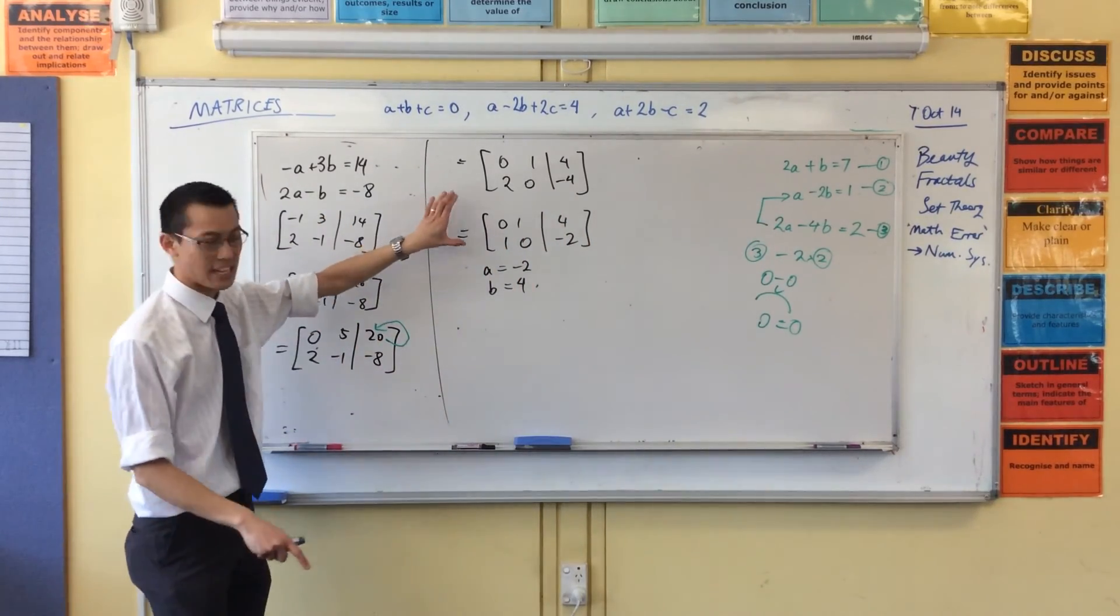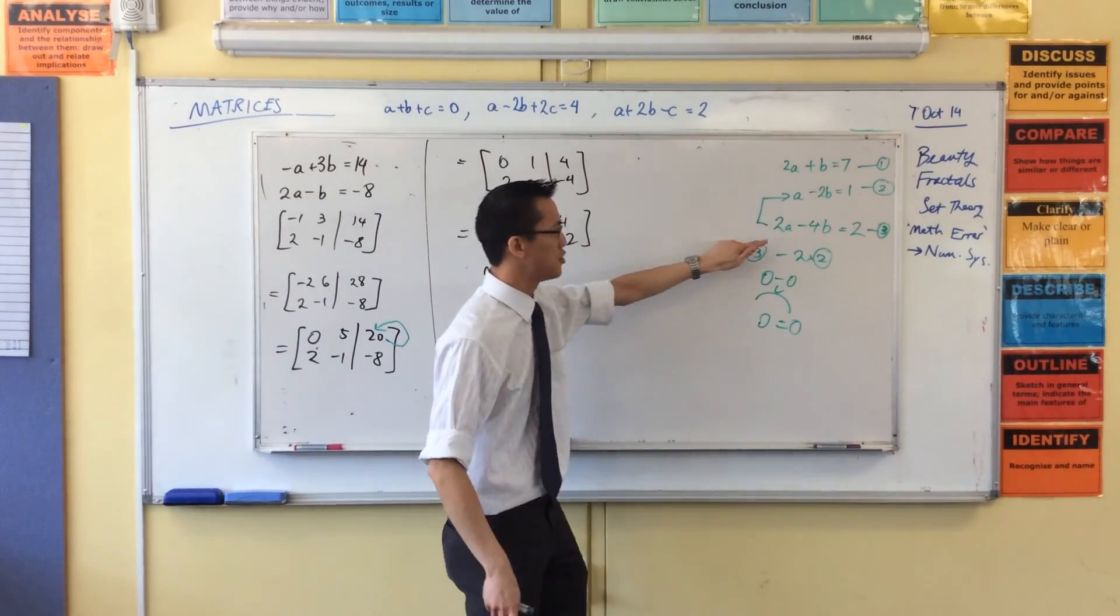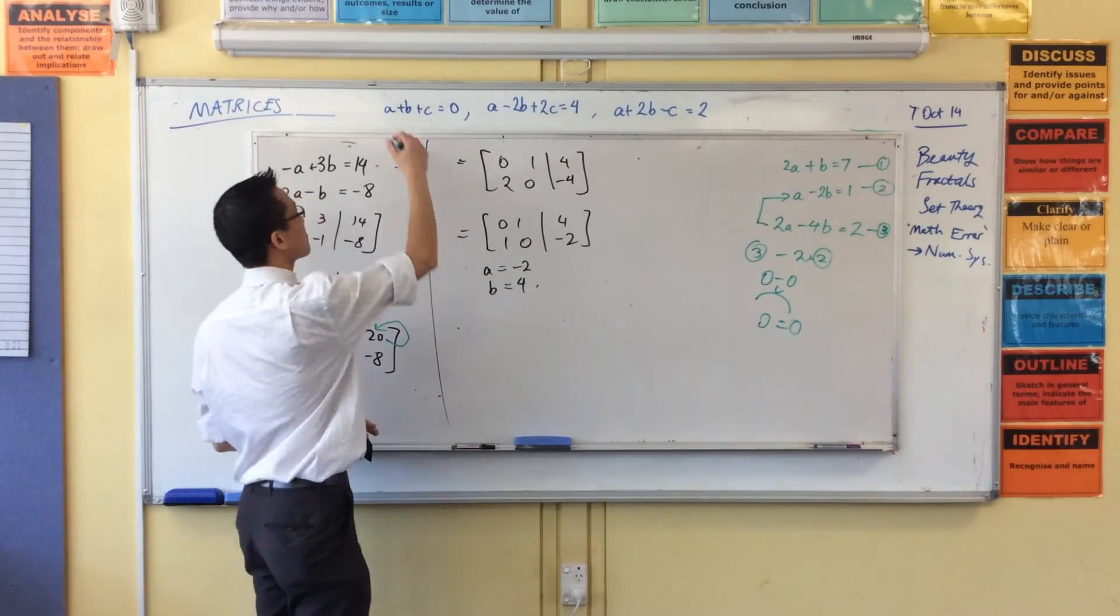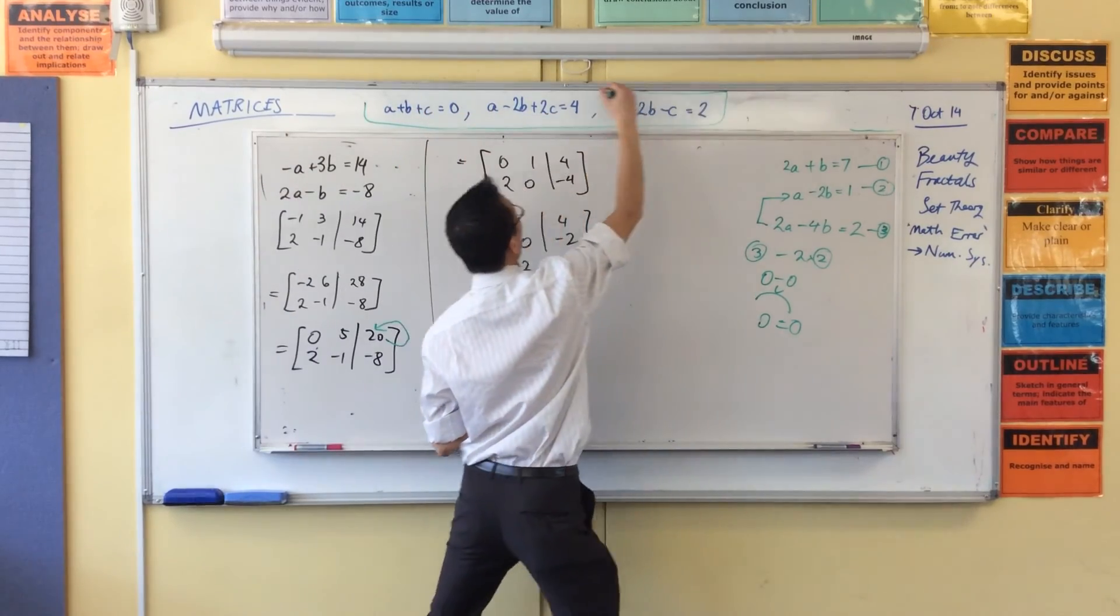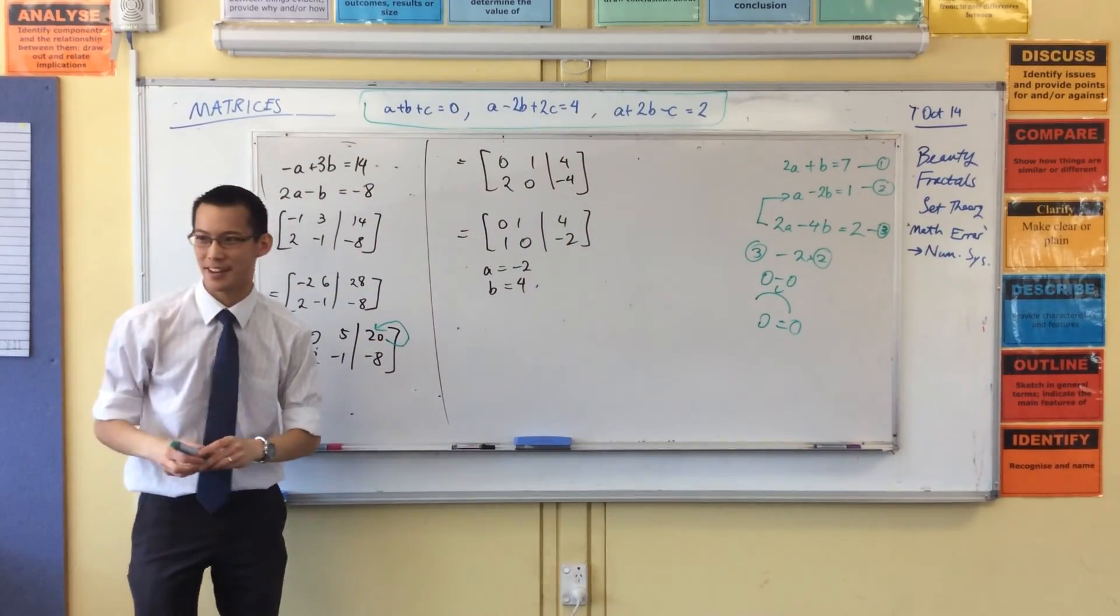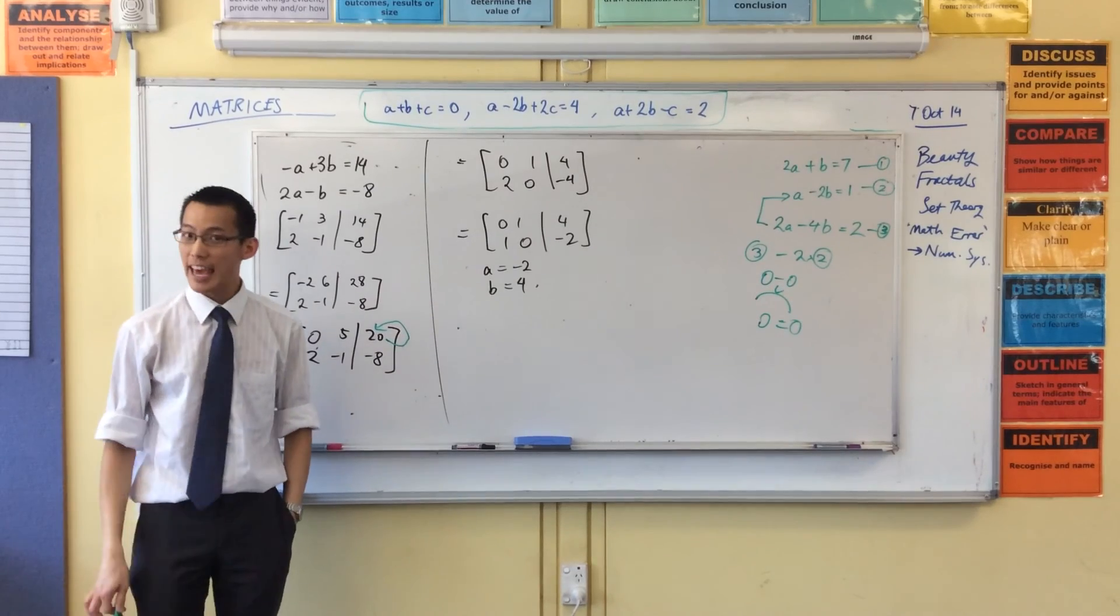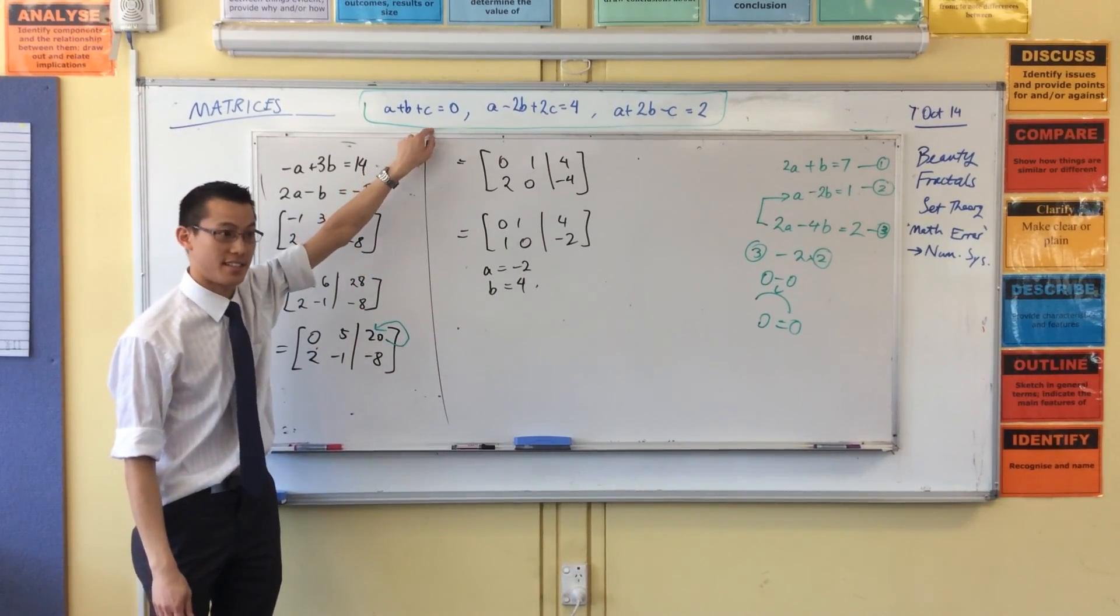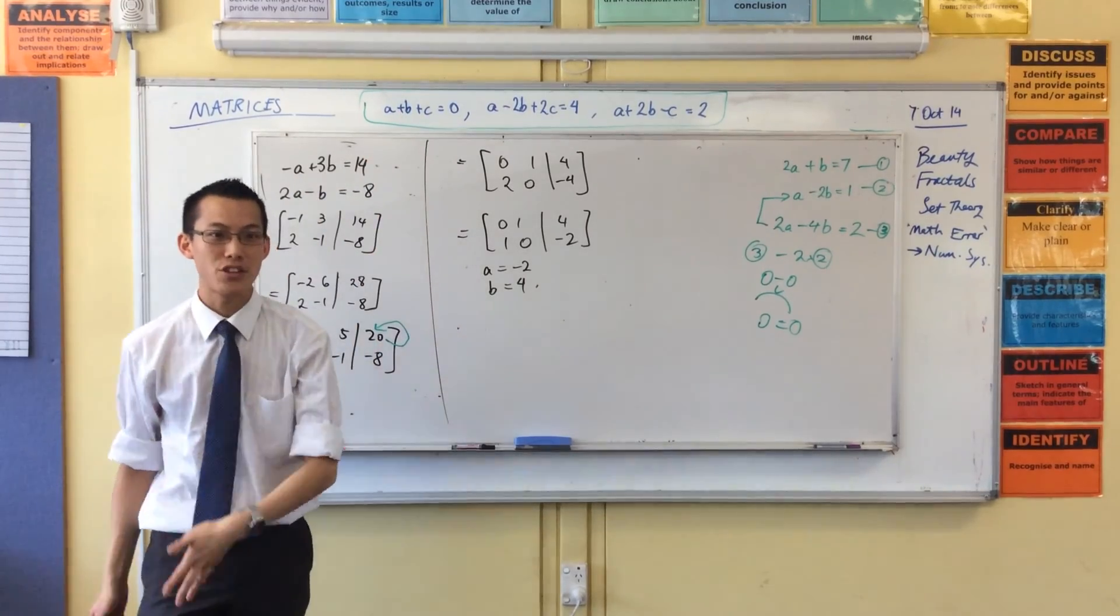So advantage one, you can do arithmetic faster. Advantage two, you don't get confused like this. Advantage number three, when you make things bigger, they don't get harder. I want you all to try now and have a go at solving this system. Write it out as a matrix, so give it a go.